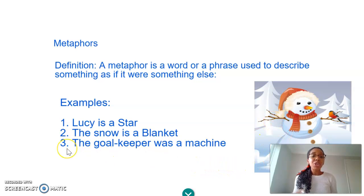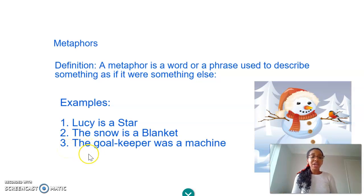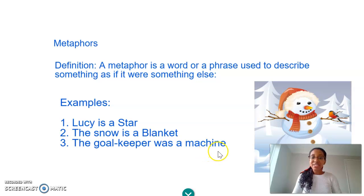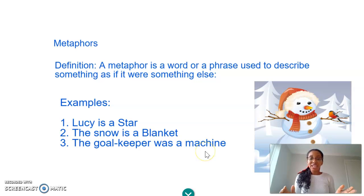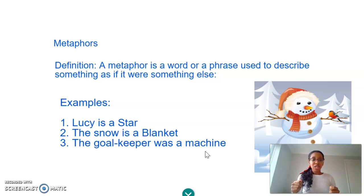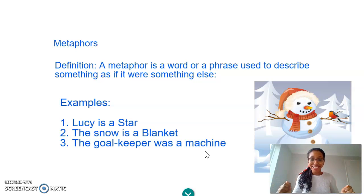And the last one: the goalkeeper was a machine. So here, who are we describing? It's the goalkeeper. And what are we comparing him to? A machine. So what does that mean? A machine — it's very accurate, does things exactly in the right way, and it does them very, very fast. So we're probably saying here that the goalkeeper is very good at his job, he's not letting any goals in. He is a machine. So that is a metaphor.